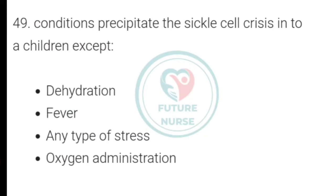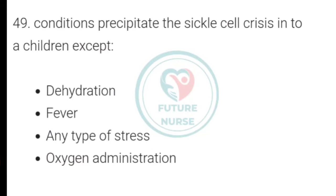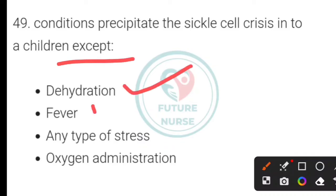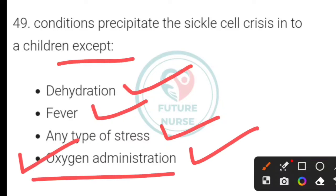Which of the following conditions precipitates sickle cell crisis in children except? Options: dehydration, fever, all types of stress, or oxygen administration. The correct answer is oxygen administration — option D.